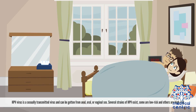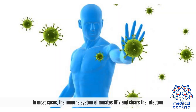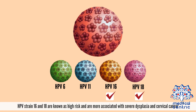HPV is a sexually transmitted virus and can be contracted from anal, oral, or vaginal sex. Several strains of HPV exist — some are low-risk and others are high-risk. In most cases, the immune system eliminates HPV and clears the infection, but in some women, the HPV virus persists over time rather than resolves. Persistent HPV infection has been shown to play a role in the development of precancerous changes in the cervix. HPV strains 16 and 18 are known as high-risk and are more associated with severe dysplasia and cervical cancer.